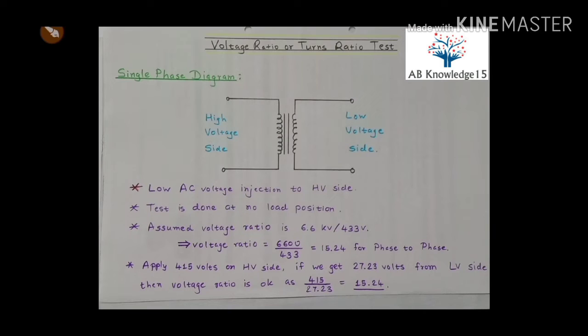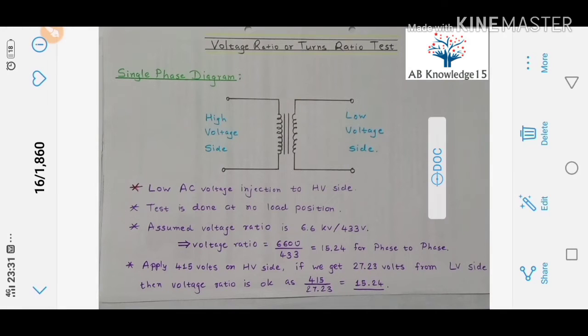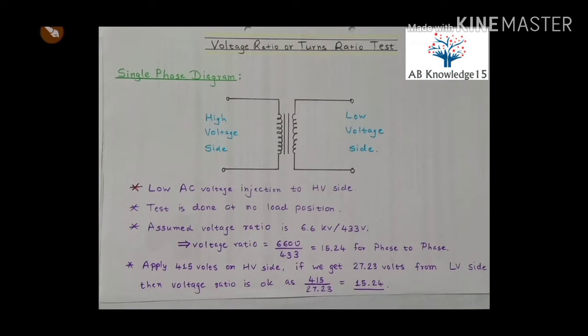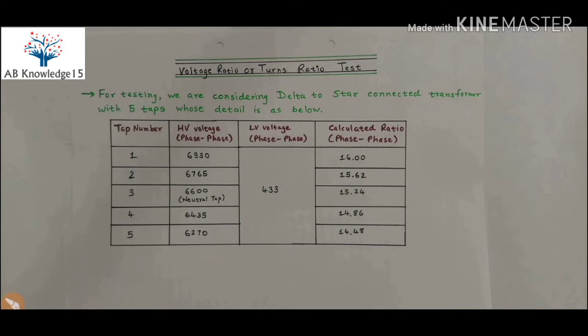This test is done at no load position of transformer. Now assume that voltage ratio is 6.6 kV to 433 volts. Voltage ratio will be 6600 to 433, which is 15.24 for phase to phase voltage. So if we apply 415 volts on HV side and if we are getting 27.23 volts from LV side, then voltage ratio is ok as the division of 415 to 27.23 will be 15.24.